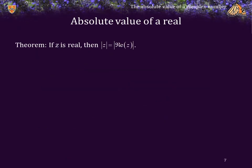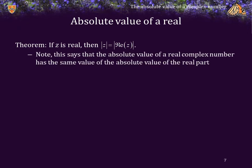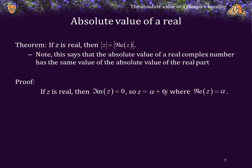Theorem: if z is a complex number that is also real, then the absolute value of z is the absolute value of the real component. That is, the absolute value of the complex number is equal to the absolute value of the real component. Proof: if z is real, then the imaginary part of z is 0. Therefore, z is equal to alpha plus 0 times j, where the real part of z is equal to alpha.